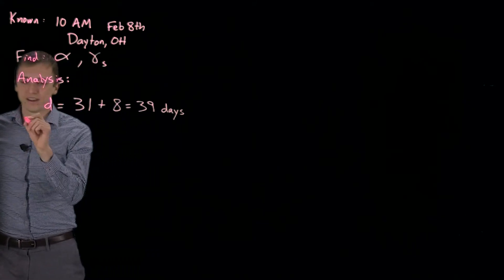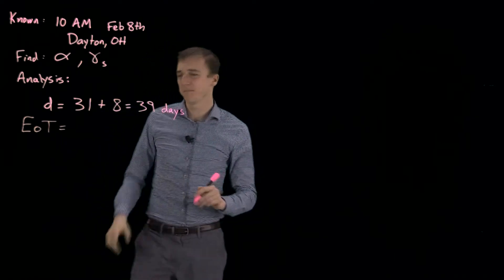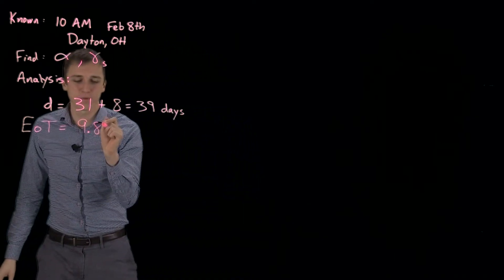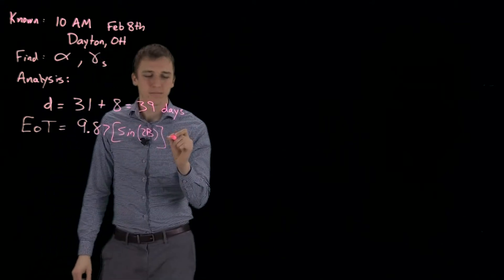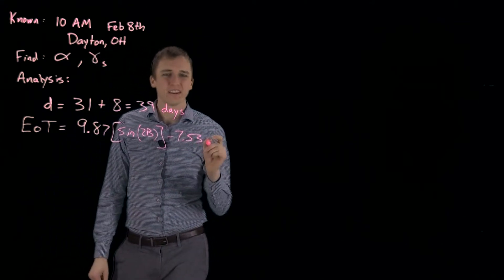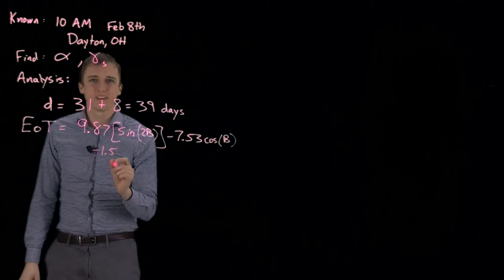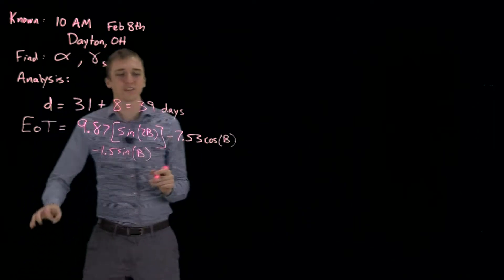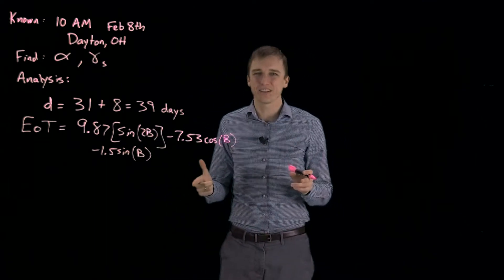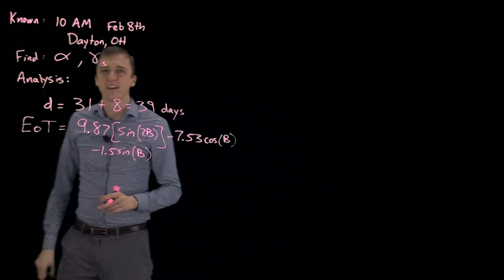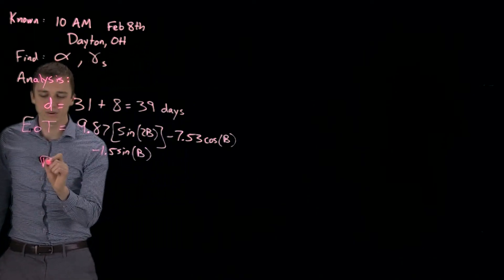Now what we do is we calculate the EOT, the equation of time, which is 9.87 times the sine of 2b minus 7.53 times the cosine of b minus 1.5 times the sine of b. This accounts for the wobble in the Earth's orbit around the sun. Since every day isn't exactly 24 hours, this accounts for that and adjusts the current time and day to the actual position of the sun.